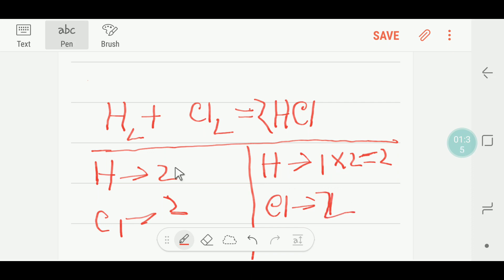Now I'll look at the number of hydrogen. So here hydrogen is two, two balanced. Chlorine is two, two balanced. So this reaction is balanced.